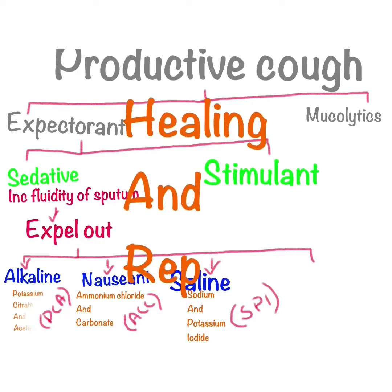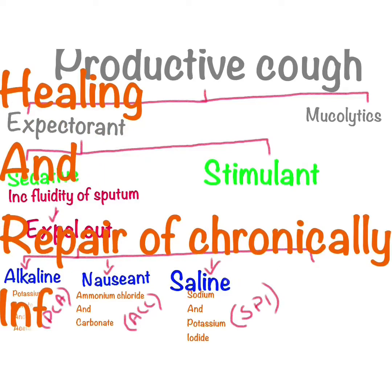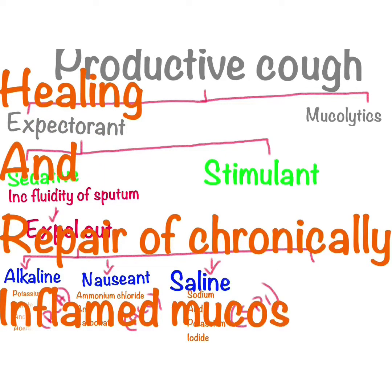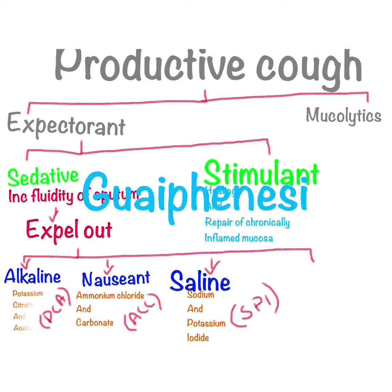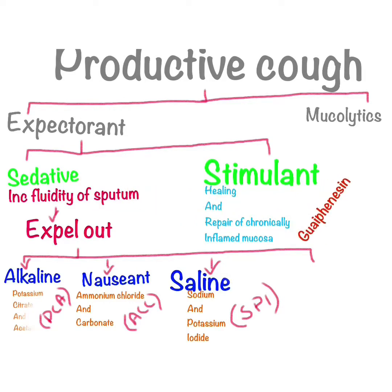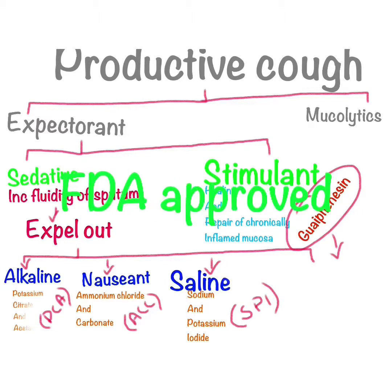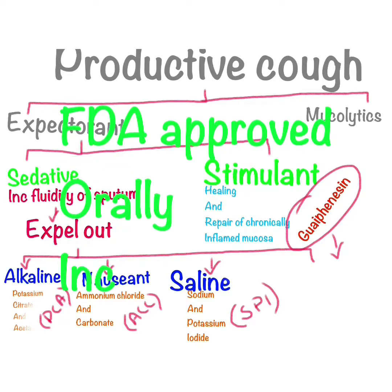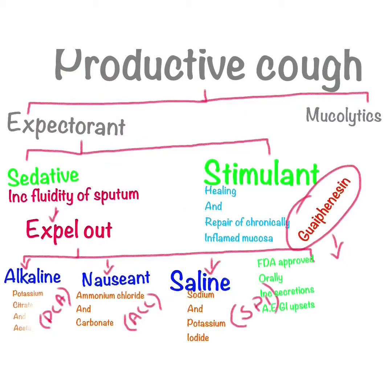Stimulant expectorants promote healing and repair of chronically inflamed respiratory mucosa, and decrease the amount of sputum as well as its odor and taste. An example is guaifenesin, which is an FDA-approved drug given in the form of oral syrup. It increases secretion production. Its adverse effect is that it creates GIT upset.